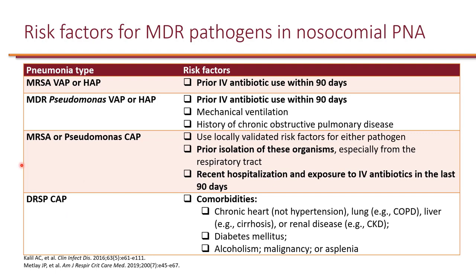Here is information from two different guidelines. The first is the HAP and VAP guidelines, which identify risk factors for MRSA in HAP and VAP, as well as risk factors for multidrug-resistant Pseudomonas. A common risk factor for both is receipt of IV antibiotics in the previous 90 days — this selects for MRSA as well as MDR Pseudomonas. For MDR Pseudomonas specifically, two additional risk factors include mechanical ventilation and a history of chronic obstructive pulmonary disease.